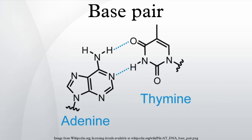Base pairs, which form between specific nucleobases, are the building blocks of the DNA double helix and contribute to the folded structure of both DNA and RNA. Dictated by specific hydrogen bonding patterns, Watson-Crick base pairs allow the DNA helix to maintain a regular helical structure that is subtly dependent on its nucleotide sequence. The complementary nature of this base-paired structure provides a backup copy of all genetic information encoded within double-stranded DNA.